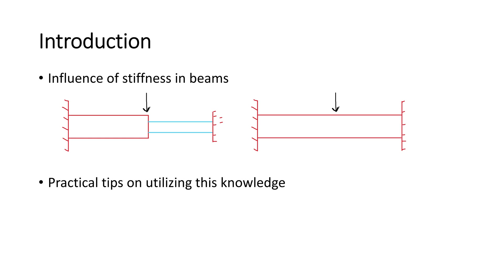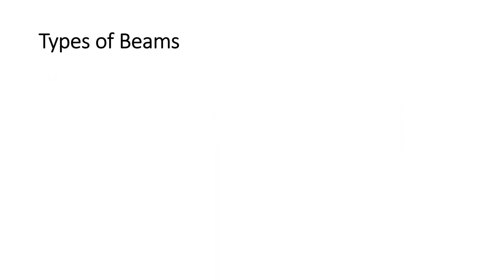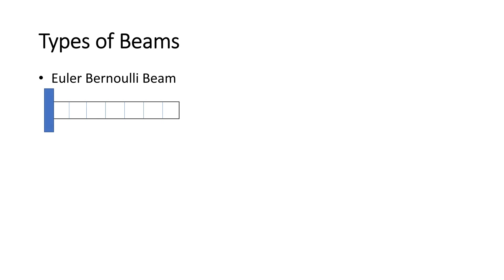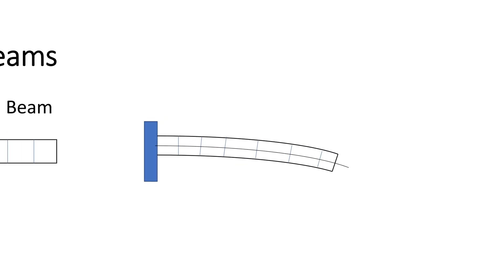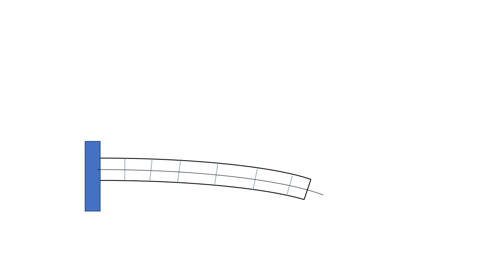Finally, we're going to discuss some practical tips on utilizing all this knowledge. Let's discuss the different types of beams. The first beam is the Euler-Bernoulli beam, which is the simplest and most commonly used type of beam in structural engineering. It has the assumption that when the beam deforms, the cross section of the beam remains perpendicular to the center line of the beam.